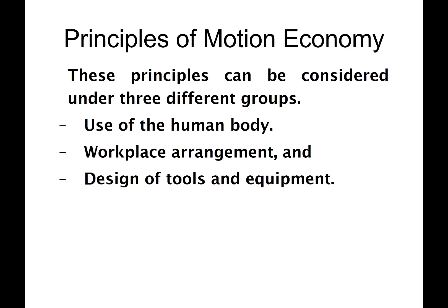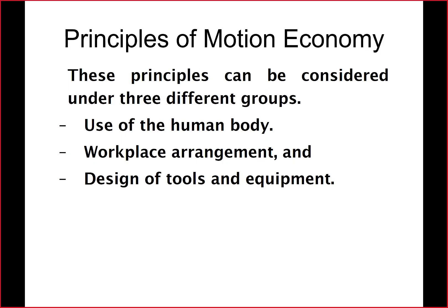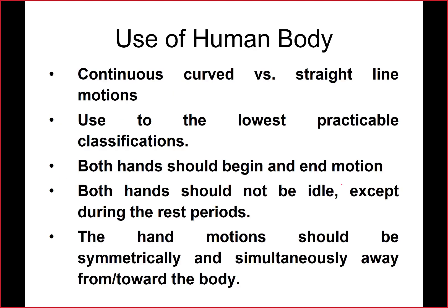This section is primarily related with ergonomics, but since it is useful in some of the process charts, we are talking about it now. The three important parts are: the use of the human body, workplace arrangement, and the design of tools and equipment. Regarding the use of the human body, any work should be designed in such a way that it involves more curved and continuous movements instead of straight-line motion, which is more difficult and needs better control.